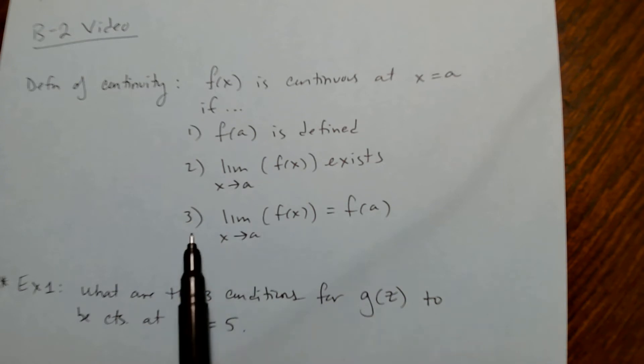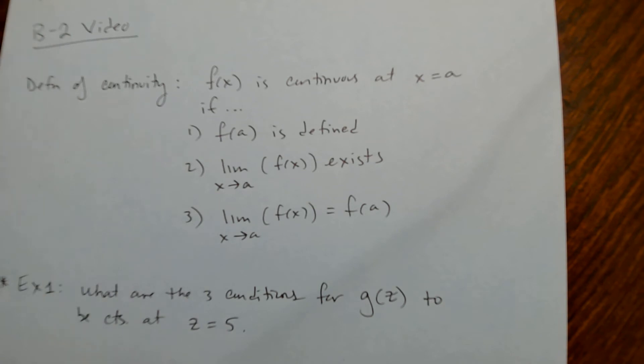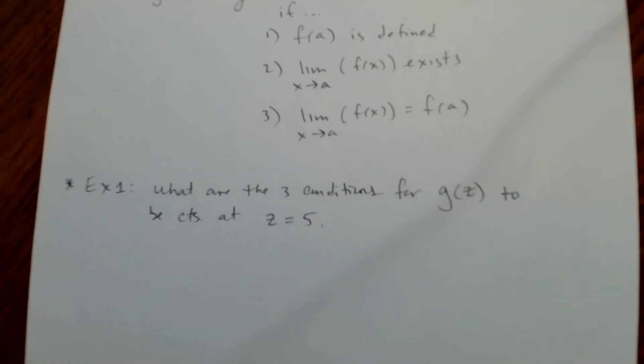Basically, number three says that one and two are equal. You could think of it that way. Now example one.